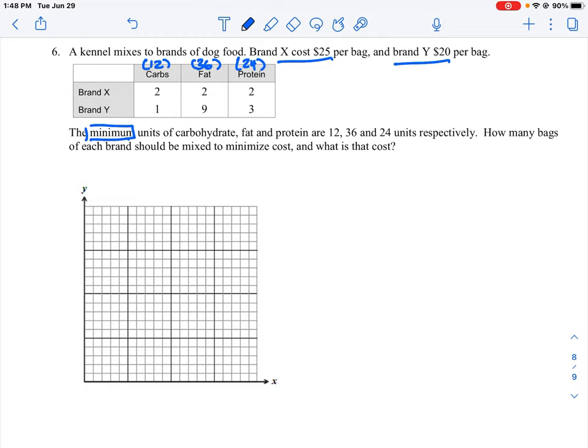So the way we're going to set this up is we're going to write down a couple of let statements here. We're going to say let the number of bags of brand X be variable X. They just unfortunately chose the letter as the same as the variable. And then we're going to say let the number of bags of Y dog food brand be the letter Y. So now this is going to be the number of bags that we are going to produce.